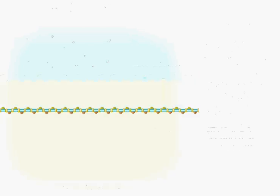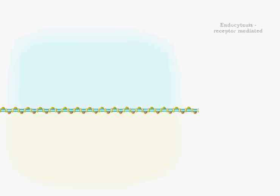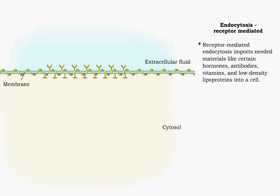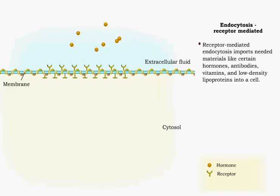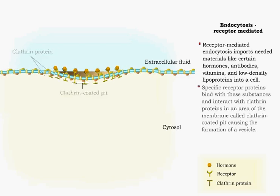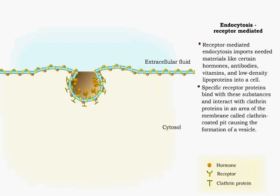Receptor-mediated endocytosis brings specific substances into a cell. Specific receptor proteins bind with these substances, and then interact with peripheral proteins called clathrin, found on the cytoplasmic side of the membrane. This area of the membrane is called a clathrin-coated pit. When the coated pit and receptor interact, the membrane folds inward to form a vesicle surrounding the substance and receptors.